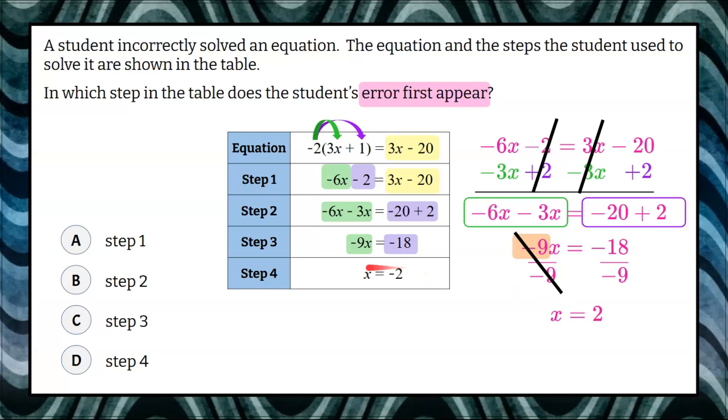So here's where the student made the error. Negative 18 divided by negative 9 is not negative 2. When you divide and they have the same signs, your quotient will be positive. So we can see that the student made the error in step 4, or answer D.